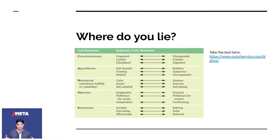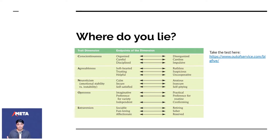The more agreeable you are, the more likely you are to say yes. The less agreeable you are, the more likely you say no — you're skeptical and a little more uncooperative. Uncooperative in this sense doesn't mean bad uncooperative. It means if somebody random comes up to you and asks you to do something, you're going to say no because they haven't given you enough of a reason to.